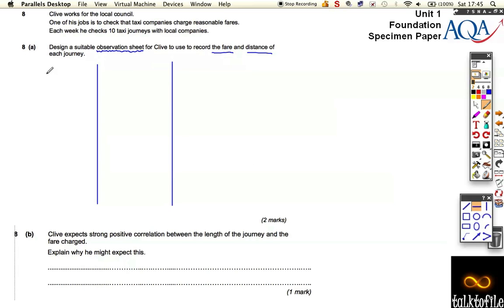It's really simple, so just nice and neat. Let's call it journey, and then let's have the distance of that journey and the fare. So we need, he's going to do 10 journeys, so he needs 10 different pieces of information for the distance and the fare, and that will get us 2 marks. One mark is for having room to put all 10 pieces of information down, and the second mark is making sure you record both the distance and the fare, which is what he needs. 2 marks, sorry. It would be nice if it was 10.